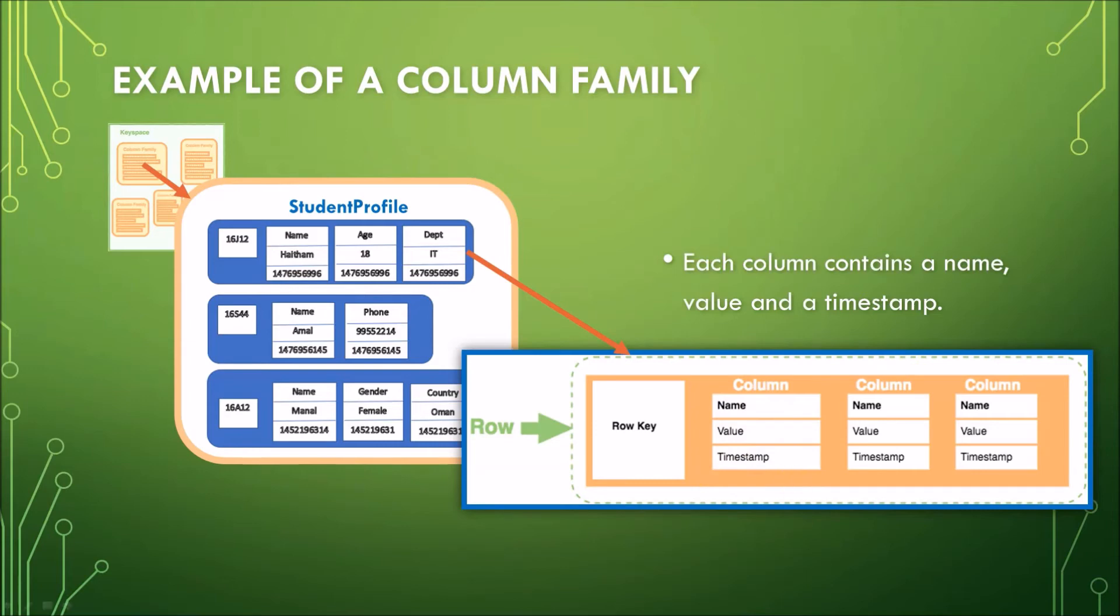So here is again the breakdown of each element in the row. This is your row key. Each row has a unique key, which is a unique identifier for that row. It's likened to a primary key. And then we have the columns. So this is one column, another column, and another one.